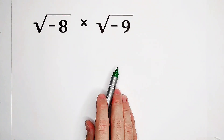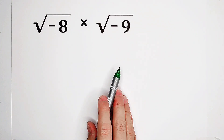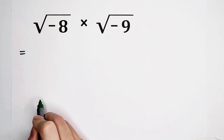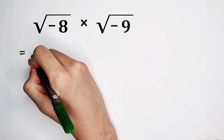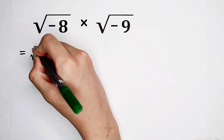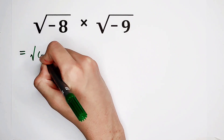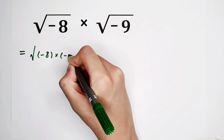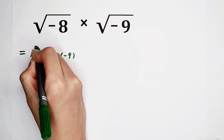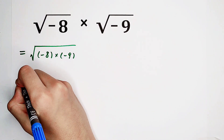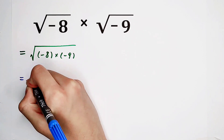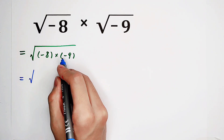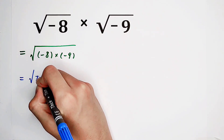This is a very popular question. First step, maybe we're gonna say it's just square root of negative 8 times negative 9. And negative times negative is positive, so that's square root of 72.